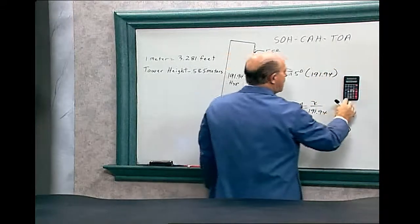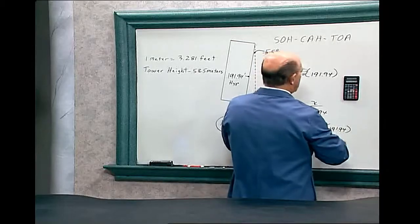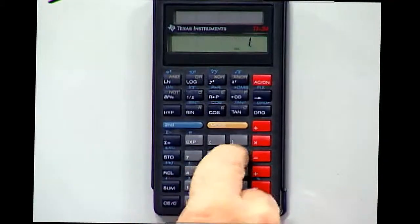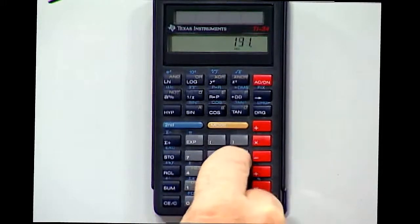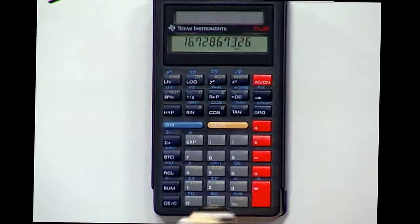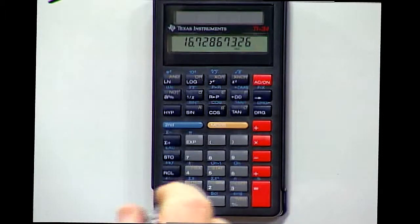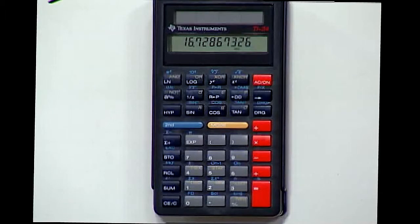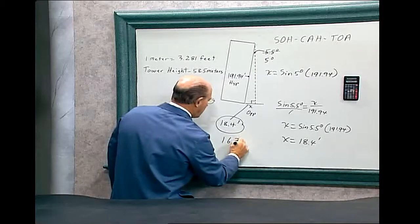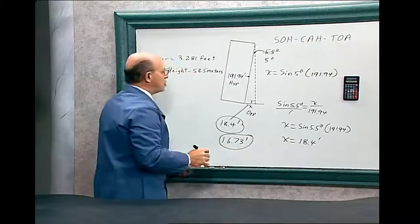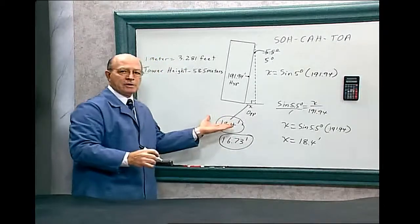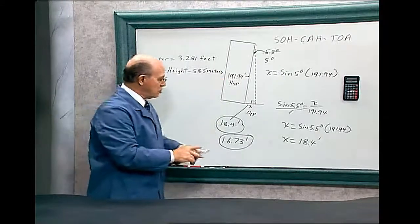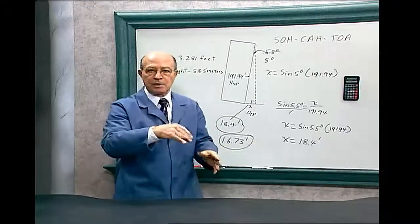Clear the calculator. Let's just plug in the numbers. 5 degrees sine times 191.94 equals 16.728 or 16.73. So that would be now 16.73 feet. So they're going to reinforce the bottom of this tower and they're going to tilt it back 5 degrees to make sure this tower doesn't collapse on them.